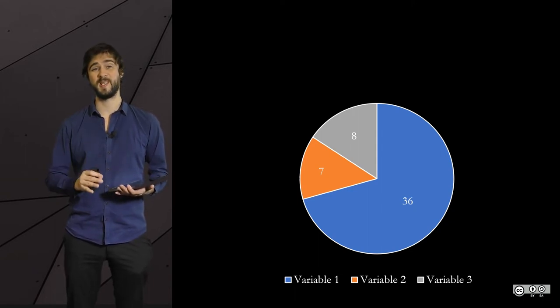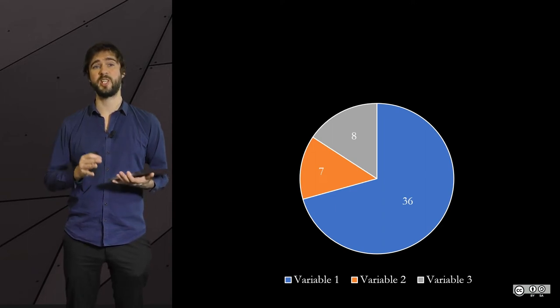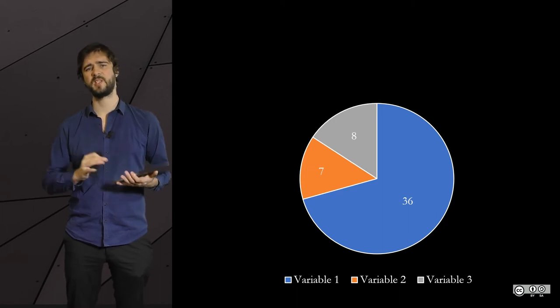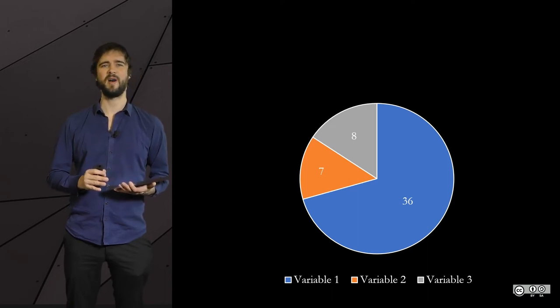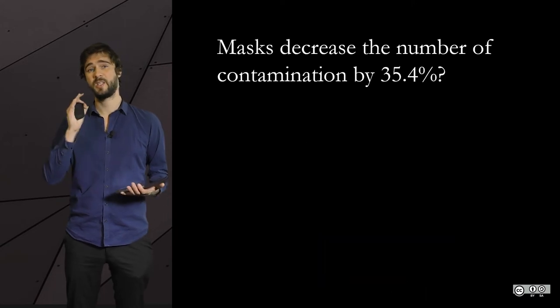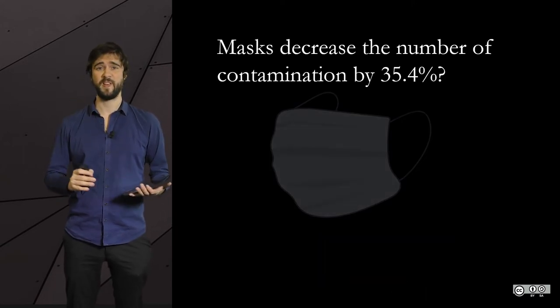Fake precision is especially annoying when a generalization is done. Let me give you an example with the debates over the efficiency of masks during the COVID pandemic. If you hear something like, you have 35% or 32% less chances to catch the virus if you wear a mask, I can assure you this is a case of fake precision.